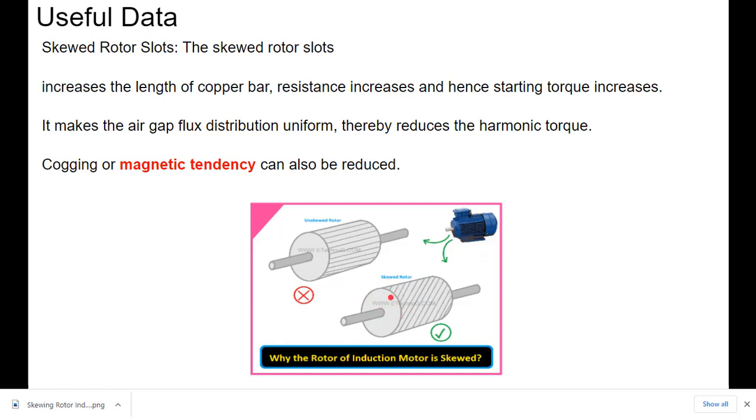Because of skewing, the length of the copper bar increases. So the resistance of the copper bar increases. Hence, starting torque increases.